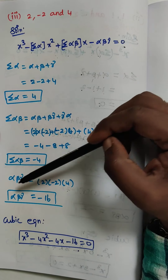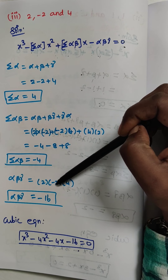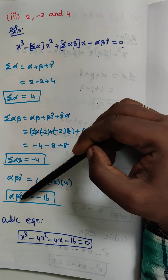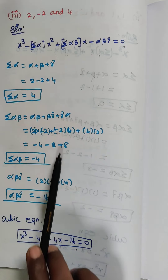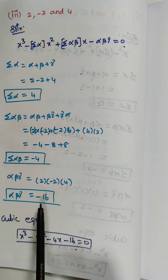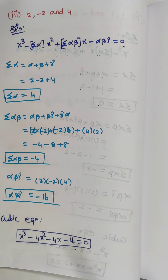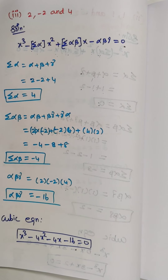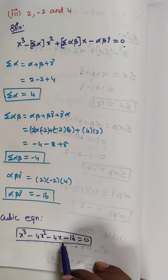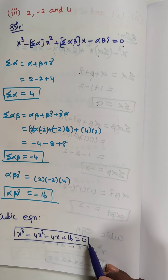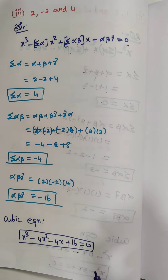Next, αβγ = 2×(−2)×4 = −4×4 = −16. So αβγ = −16. The cubic equation: x³ − 4x² + (−4)x − (−16) = 0, which gives x³ − 4x² − 4x + 16 = 0. That is the answer for the third subdivision.